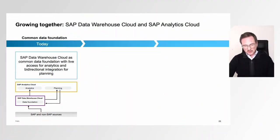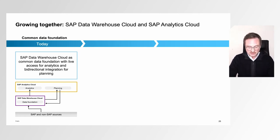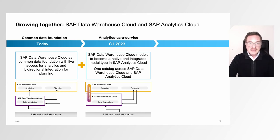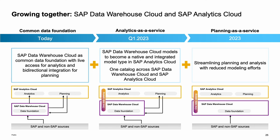The last thing I want to show regarding SAP Analytics Cloud is our roadmap for integration with Data Warehouse Cloud. Today, we can already use SAP Data Warehouse Cloud as a common data foundation with live access for analytics and bidirectional integration for planning. The next step will be to make Data Warehouse Cloud models native and integrated models inside SAP Analytics Cloud alongside one catalog across both products. Current plan is Q1 2023. In the long run, we want to make planning available as a service with reduced modeling efforts in a deeply integrated fashion between Data Warehouse Cloud and SAP Analytics Cloud.